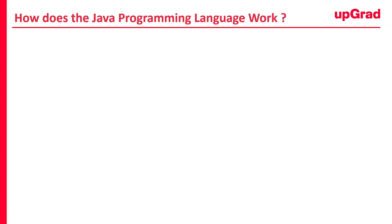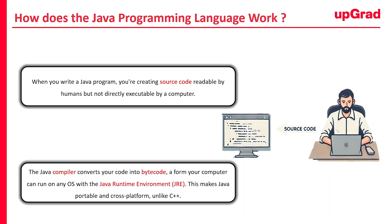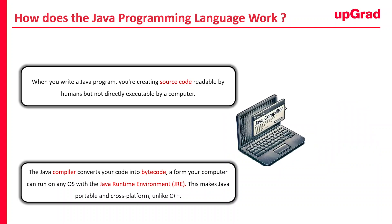So, how does the Java programming language work? When you write a program in Java, you are creating what's known as source code. This is the code that you as a developer write using a text editor or an integrated development environment, that is IDE. It's in a format that is easy for humans to read and understand, but it's not something your computer can execute directly. To make this code runnable, it first needs to be translated into a form your computer can understand — and that's where the Java compiler comes in. The compiler takes your code and converts it into an intermediate form known as bytecode. This bytecode can run on any operating system as long as that operating system has the Java Runtime Environment, i.e. JRE. Unlike C++, where the code must be recompiled for different systems, Java's bytecode is portable — it can be executed anywhere, making Java a truly portable language.